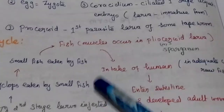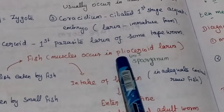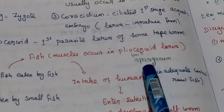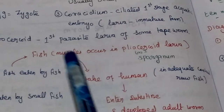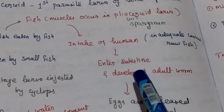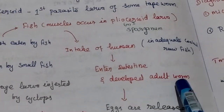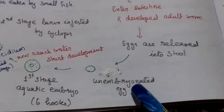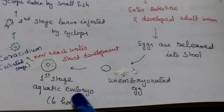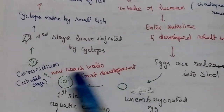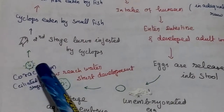In the life cycle: the fish muscle contains the plerocercoid, the infective form of larvae, also called plerocercoid (pharanginum). When humans eat this fish through inadequate cooking or as raw fish, it enters the intestine, develops into an adult worm, mating occurs, and eggs are released into the stool sample as unembryonated eggs — the first-stage aquatic embryo, having six hooks.